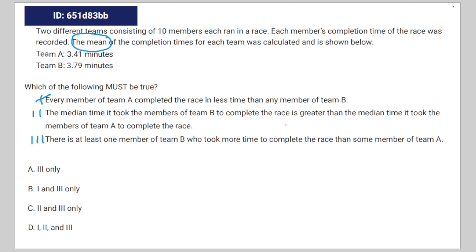Choice two uses the same sort of reasoning: the median time it took members of Team B to complete the race is greater than the median time for Team A. You're only given data for the mean, so you can't draw any conclusions about the median. The only situation where you could is if a relationship between the mean and the median was established, which it wasn't. So two can't be true.